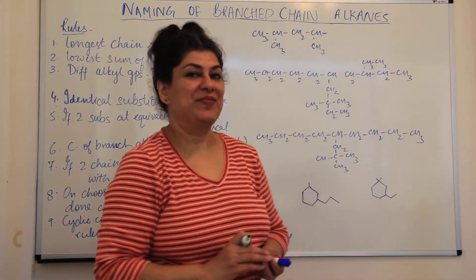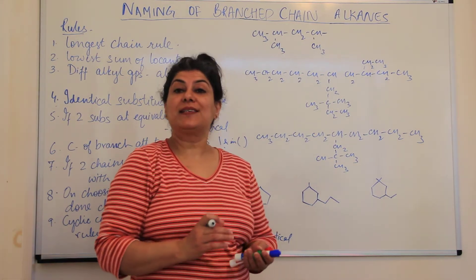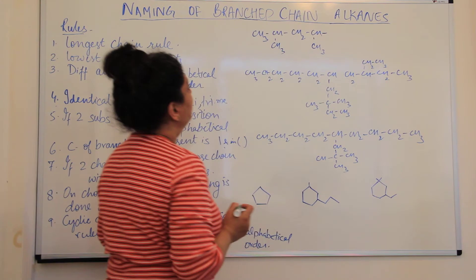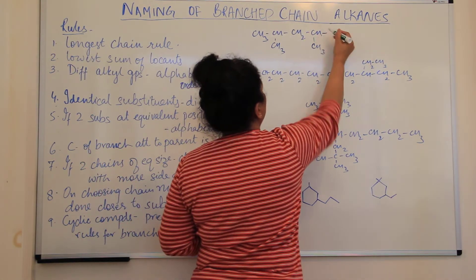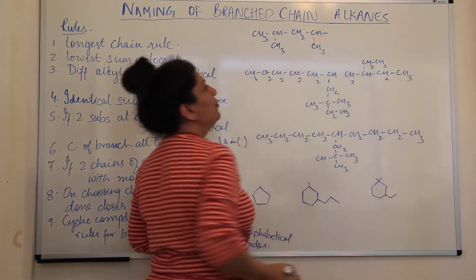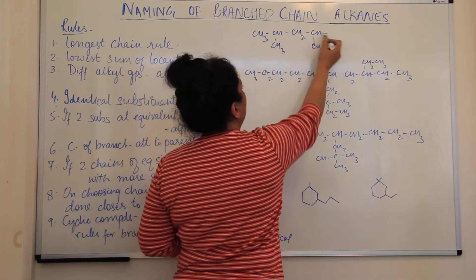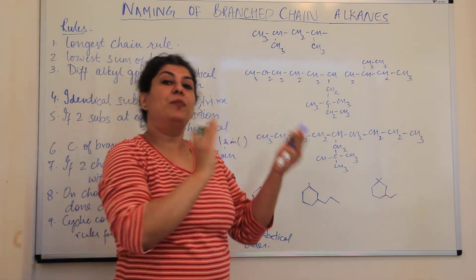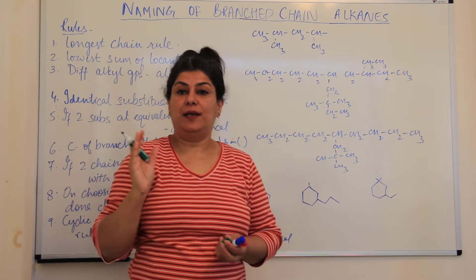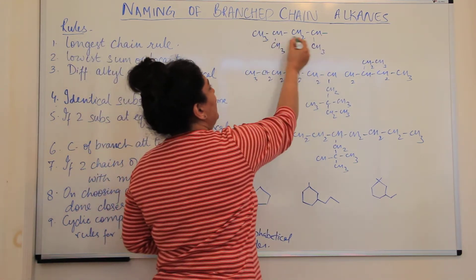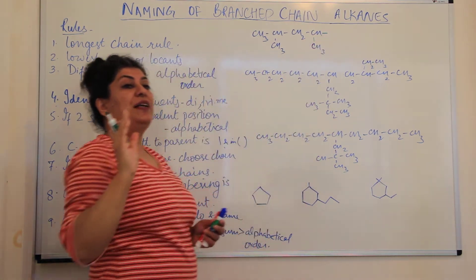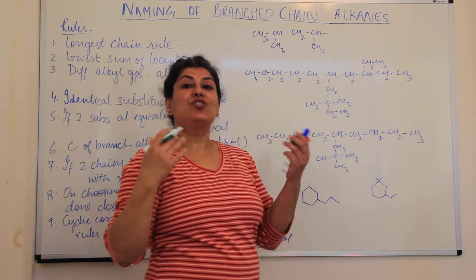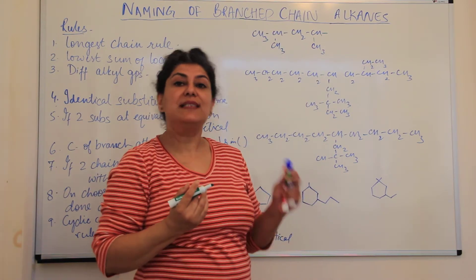Thank you for returning. We now study complex substituents, or substituents which themselves may be branched. We find the longest chain in a complex substituent, and the numbering is done in such a way that the carbon which is attached to the main chain — that is, the parent alkyl group — always gets the locant one.